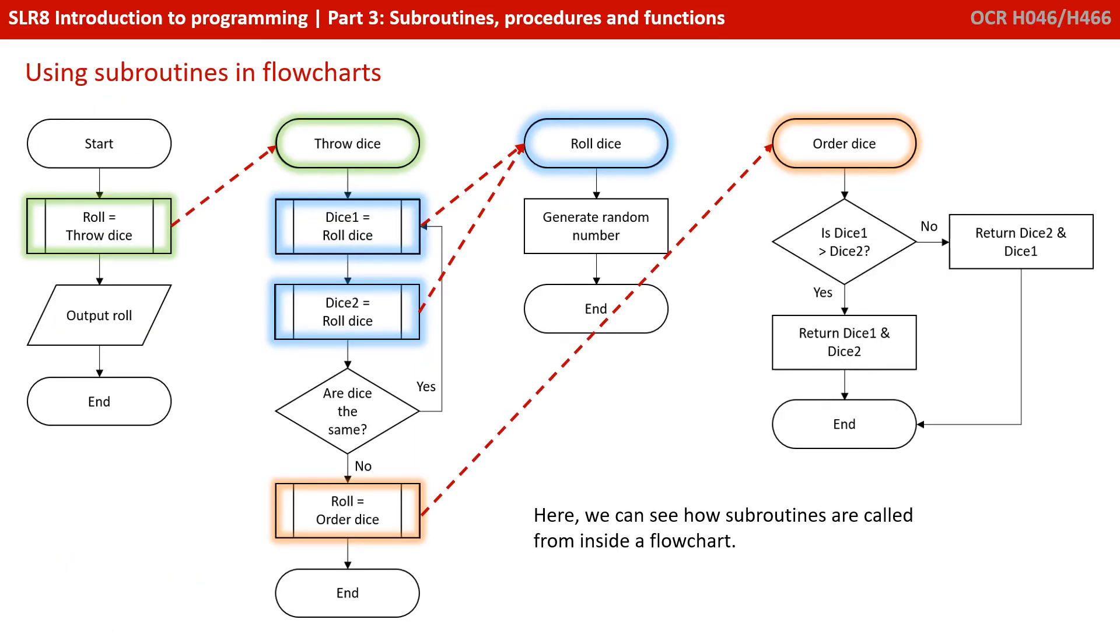Here we can see how subprograms are called from inside flowcharts. There's a specific symbol used in flowcharts, which tells you that you need to jump off and start executing another flowchart. And when you reach the end of that flowchart, you'd return from the one that called it and carried on. So this is the flowchart for the previous program we showed you in Python. Pause the video for a second and just work through it slowly so you can see how you jump back and forwards between the different flowcharts as they're being called.